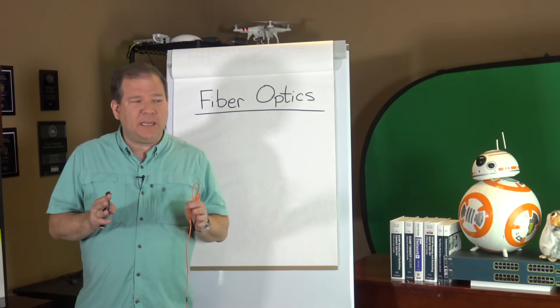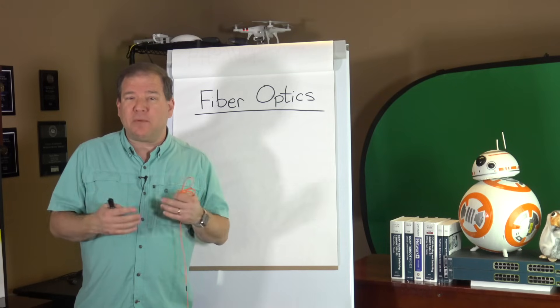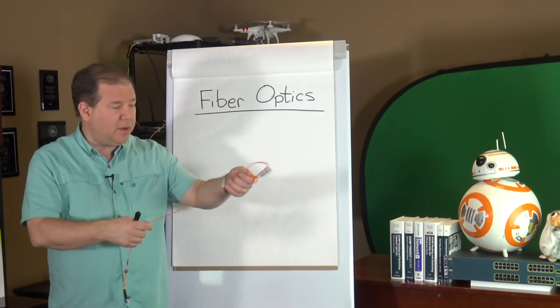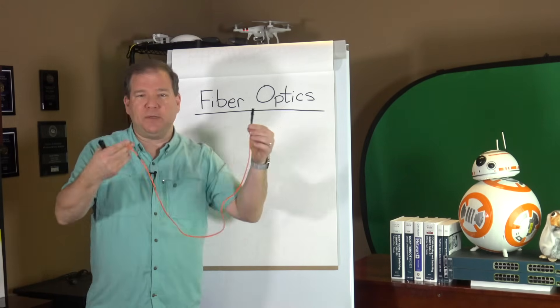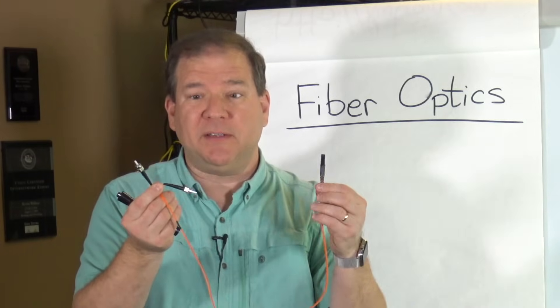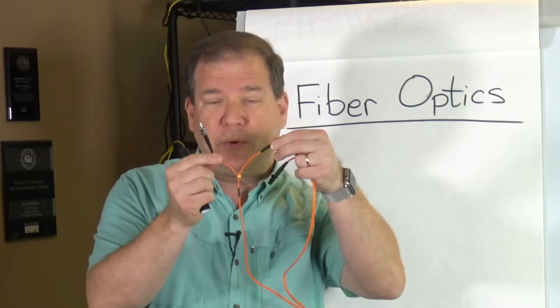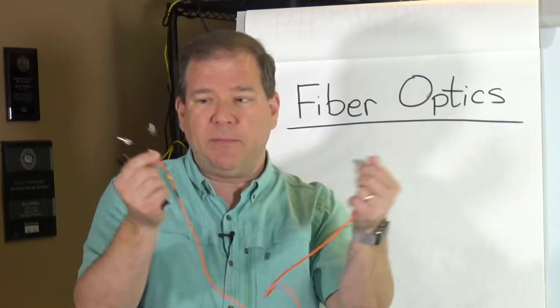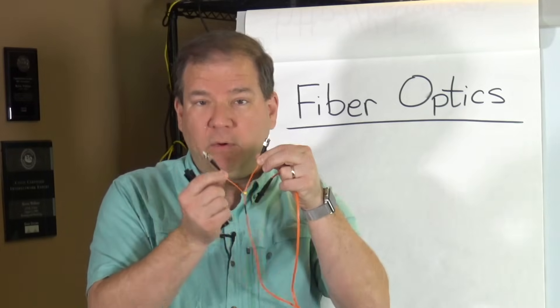To begin with, let's think about physically how fiber optic cabling works. Here's an example of a very short fiber optic jumper cable that we might plug into a piece of equipment. Notice that we have two strands of fiber in each of these cables. One is for receive and one is for transmit.